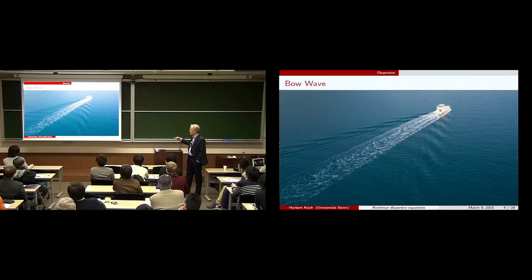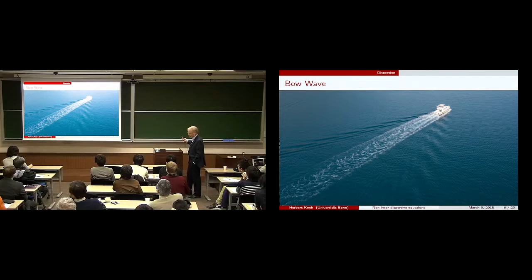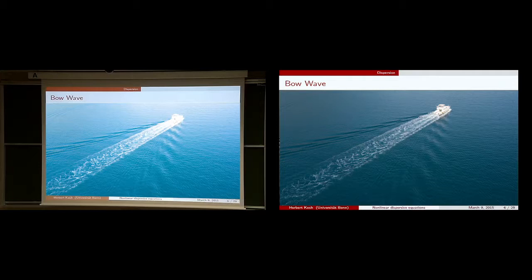There are some interference patterns where different frequencies play a certain role. Since different frequencies have different velocities, in different positions in space you see different frequencies in different overlap — you see these oscillations. You can also see that waves seem to decay, and that's this dispersive effect.